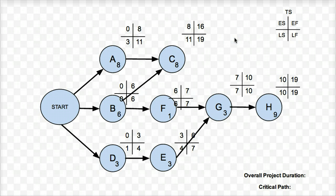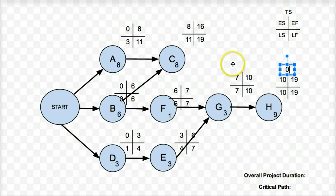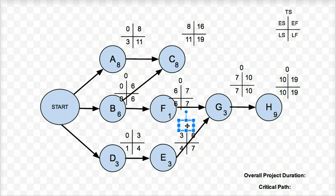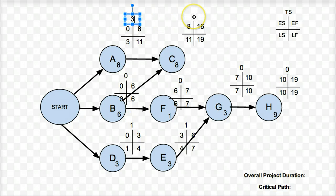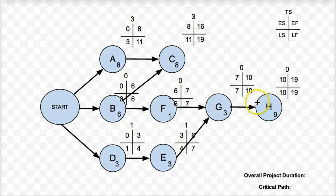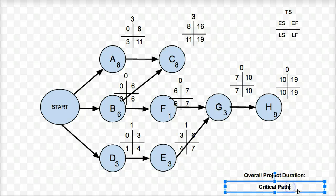Those are all my different early starts, early finishes, late starts, and late finishes for all my different tasks. From there, I can now calculate all my total slacks — total slack is just the late finish minus the early finish. Nineteen minus nineteen is zero; ten minus ten is zero; seven minus seven is zero; six minus six is zero. That looks like my critical path right there. For E: seven minus six is one. For D, the figure is one. For A, the figure is three. And C, the total slack figure is also three. The critical path is any activity with a total slack of zero, and I will always have at least one path with a trail of zeros. So the critical path on this project is B, F, G, and H — with an overall project duration of nineteen days.